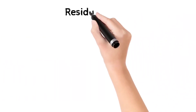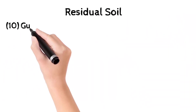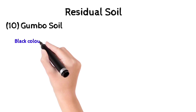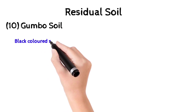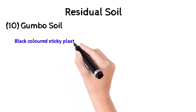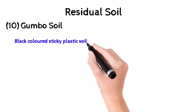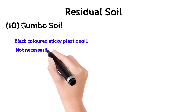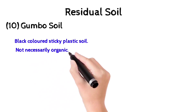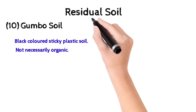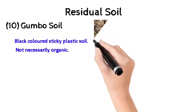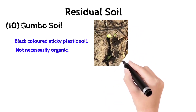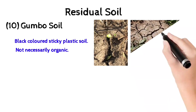The last classification of residual soil is gumbo soil. It is a black color sticky plastic soil, not necessarily organic — it may be organic or inorganic.